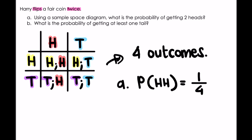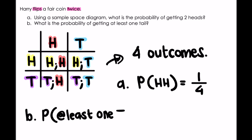The next question says: what is the probability of getting at least one tail? At least one tail means it can also be two tails, because two tails is still at least one tail. The probability of at least one tail — there are four outcomes in total, and how many of those four outcomes consist of a tail? Three out of four of them consist of a tail.